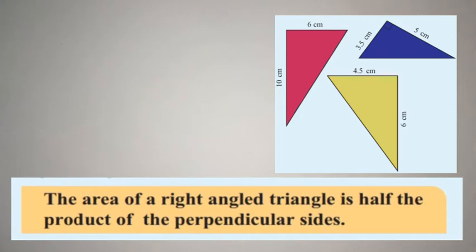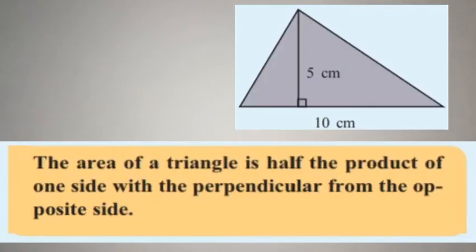The other triangle is another triangle. Let's take a look at the triangle. The perpendicular side is the opposite side. We will multiply and divide. We will see the triangle again and be able to see the area of a triangle. We will learn the same method.